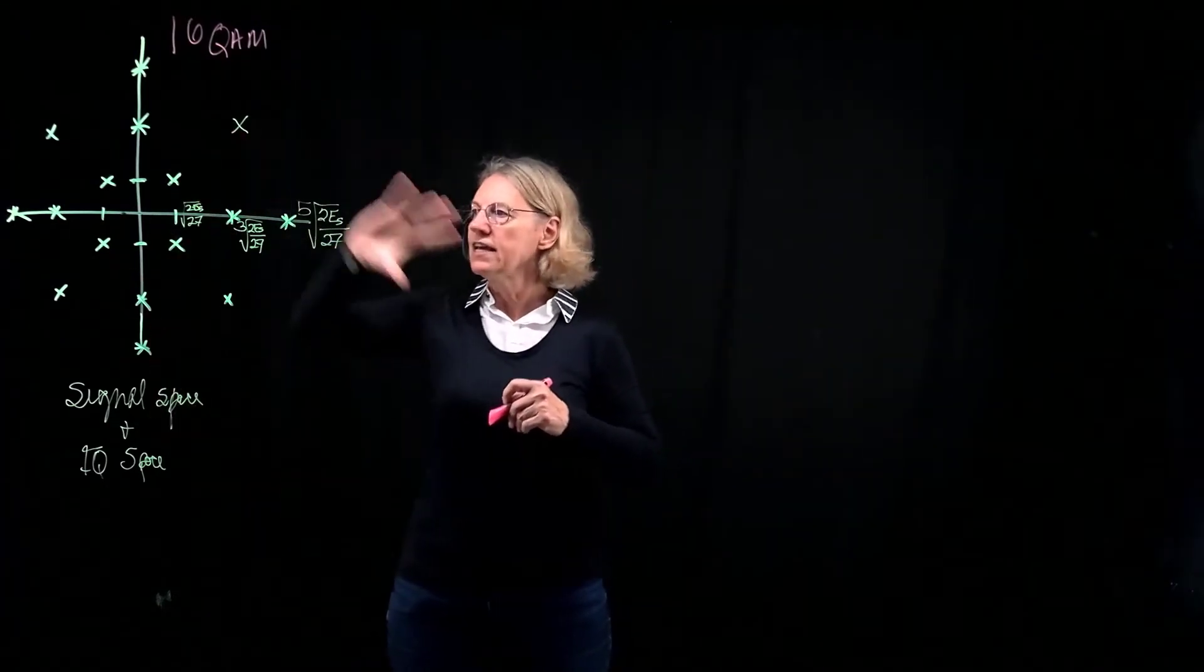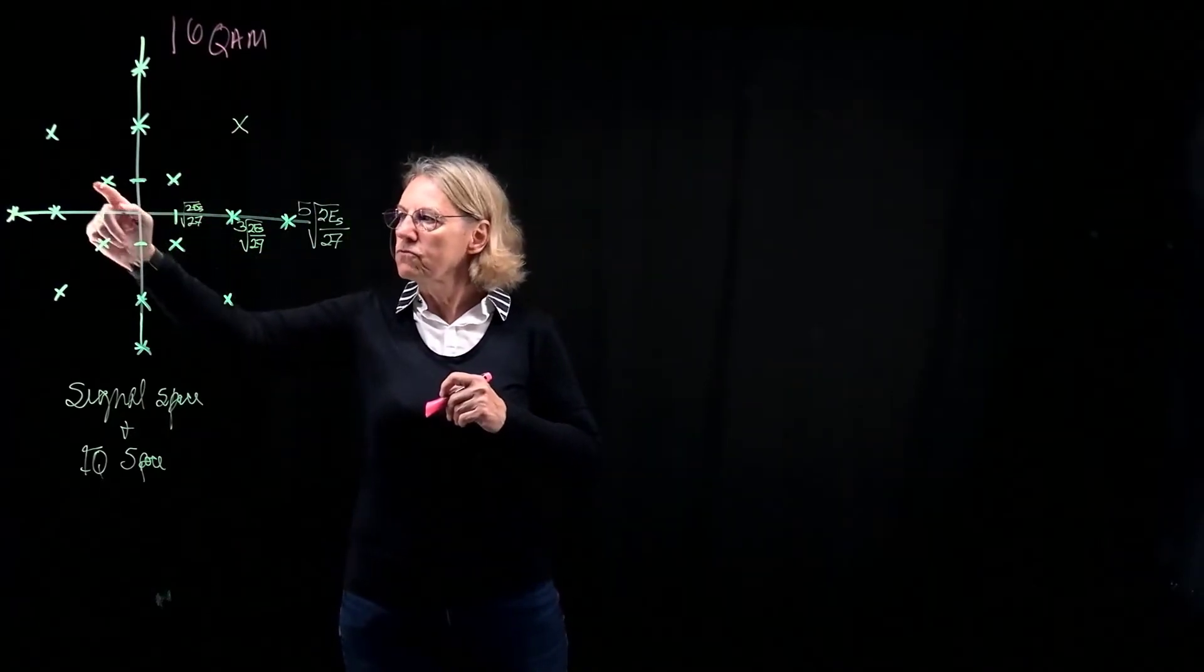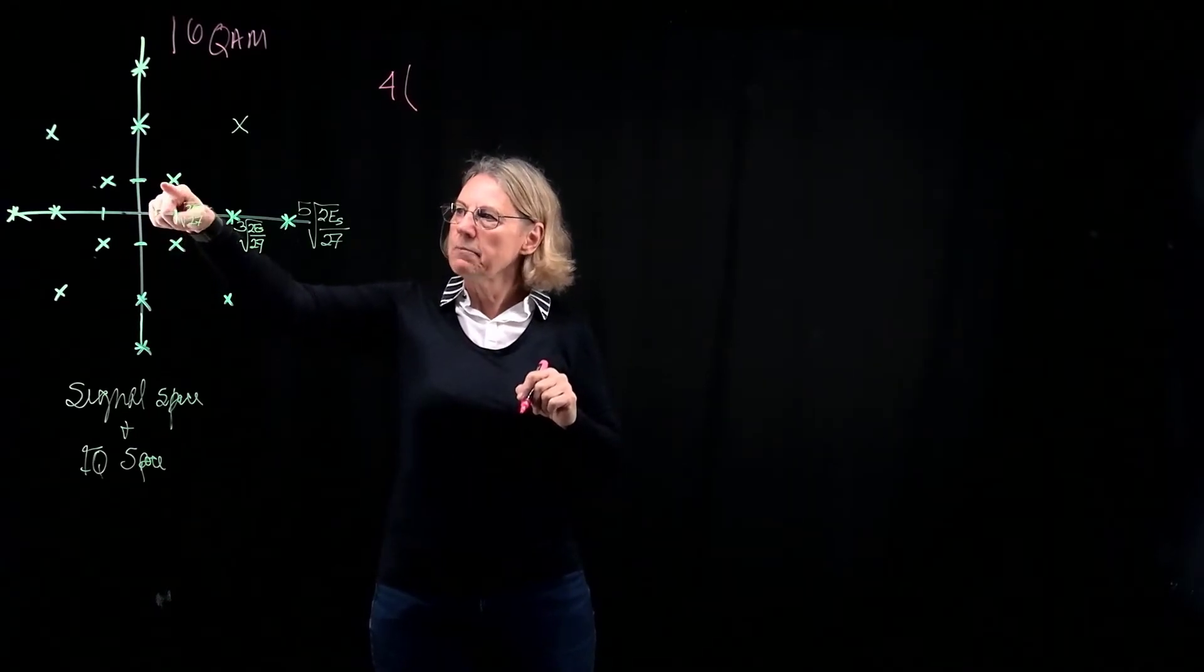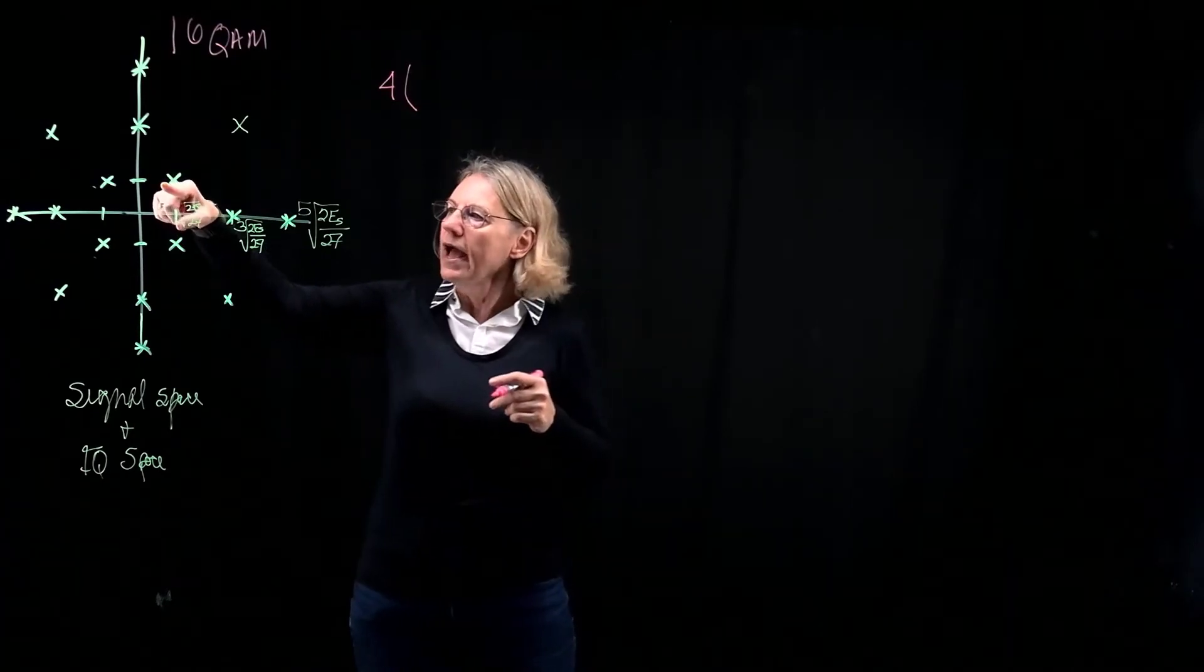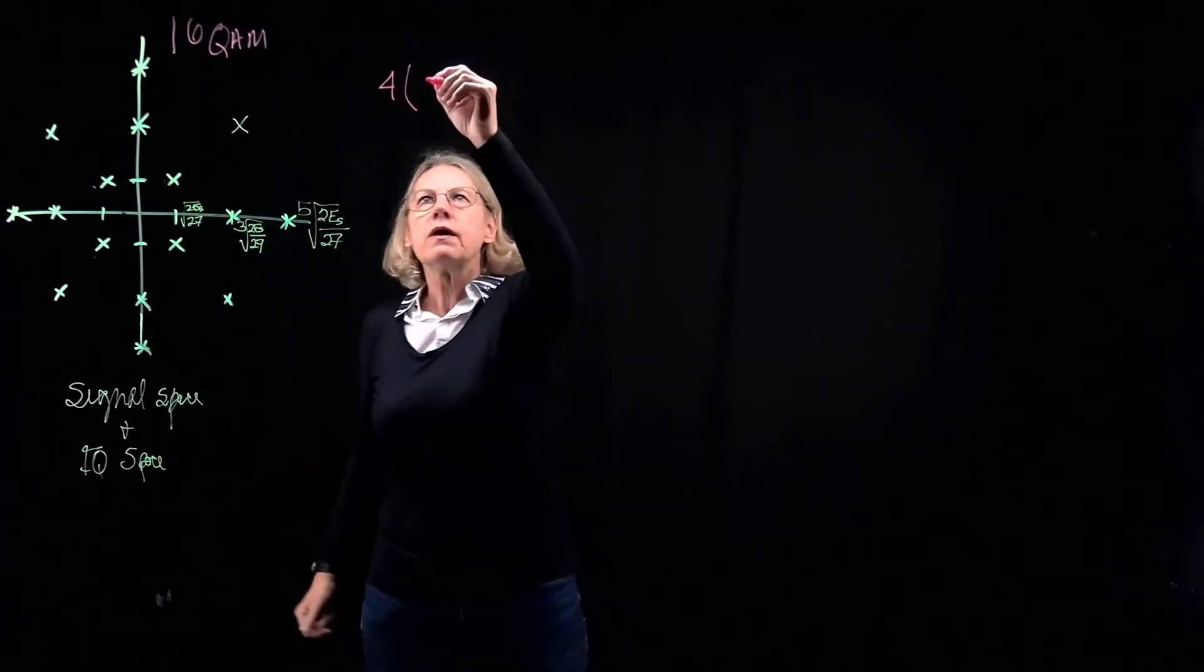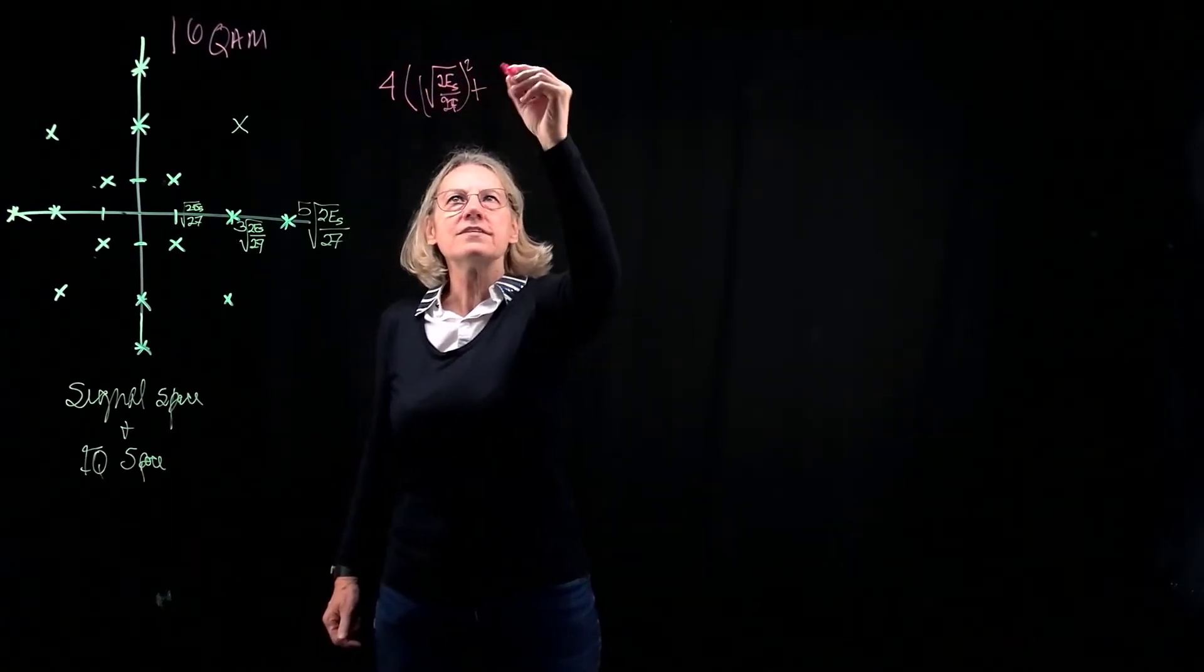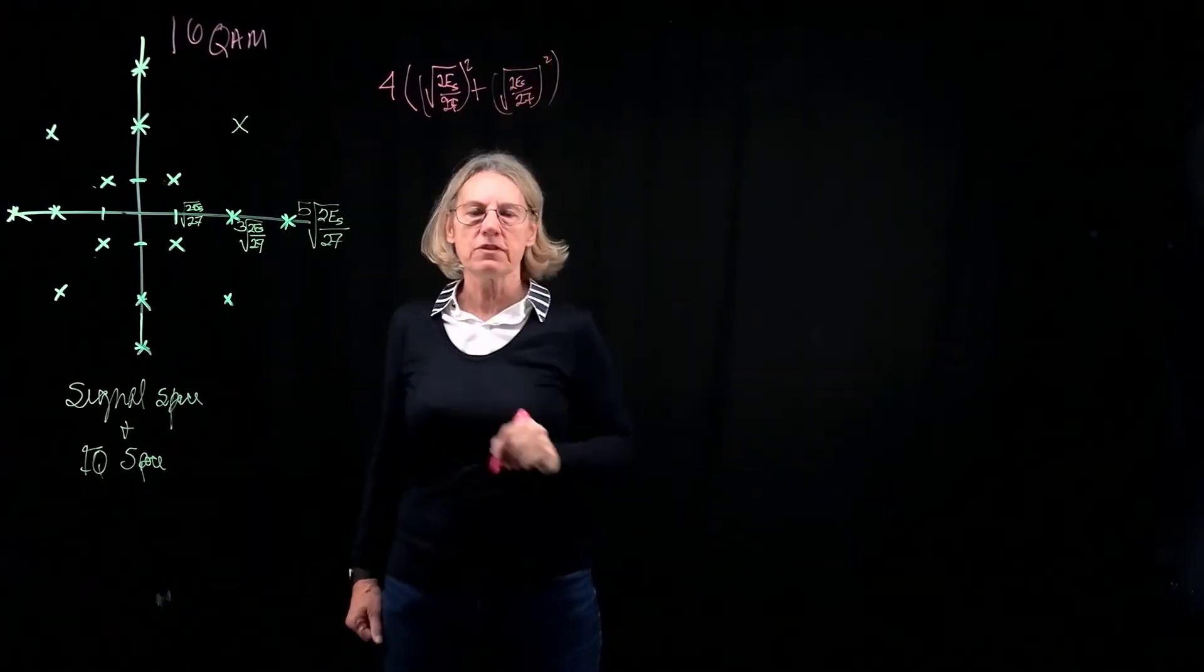So to do that, we're going to take the various points and calculate their energy. Let's take the four innermost points. So that would be four of those. And what is the length of that vector? Well, there's the coordinates. This is plus the square root of 2ES over 27 for the x-coordinate, or the in-phase coordinate, and another square root of 2ES for the quadrature, or the y-coordinate. So I would put the square root of 2ES over 27, squared, plus the square root of 2ES over 27 again, squared. So that would be the first one.